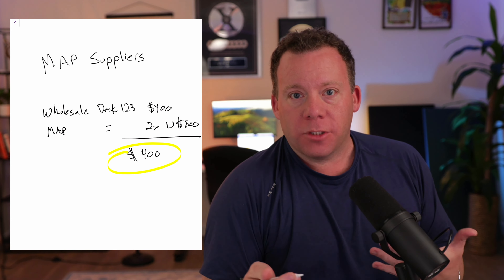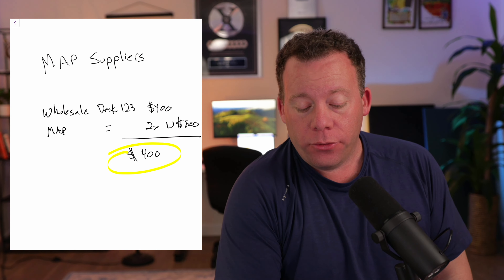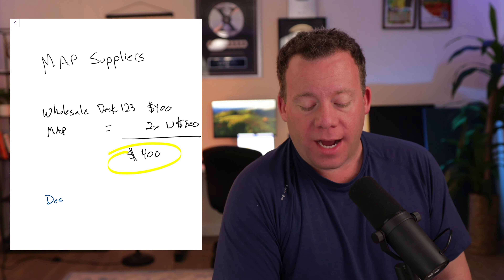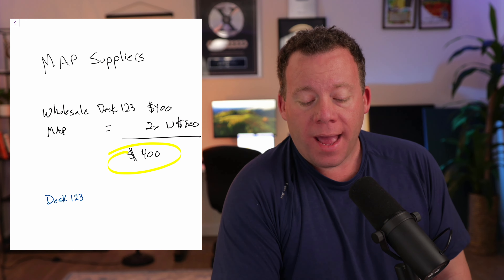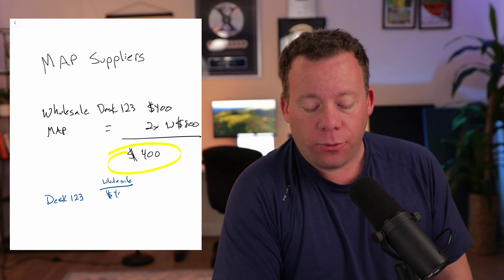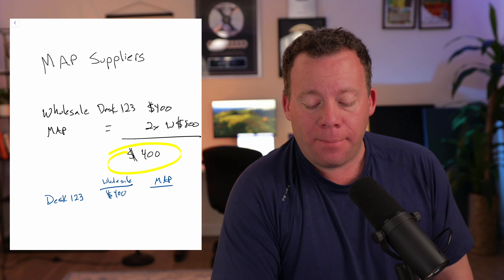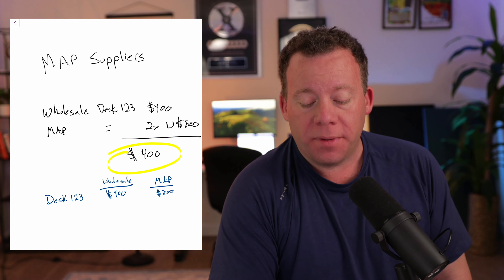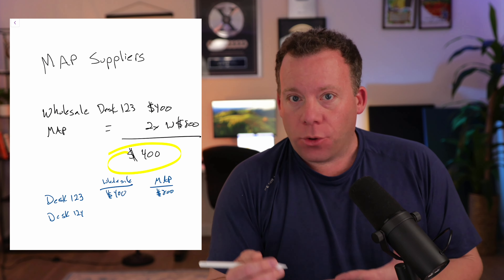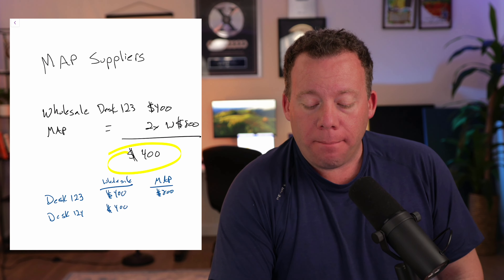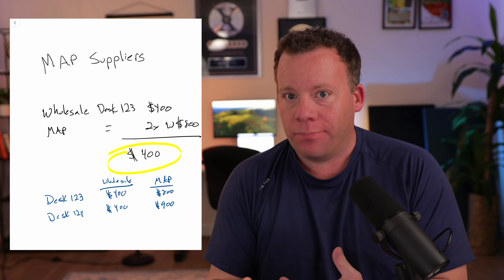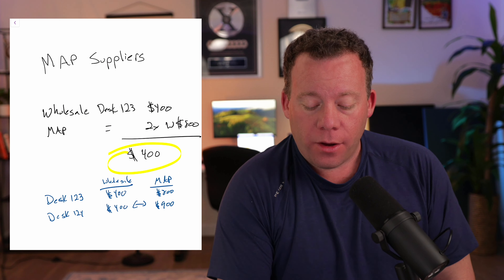They don't always do it this way. Some suppliers might actually send you a price list that includes both things. It might have the first column be the product — desk 1, 2, 3 — then a column for wholesale (say $400), and then another column that has MAP (say $800, which in this case would be 2X). But then maybe desk 124 has a wholesale price of $400 but MAP for that product is $900 — the spread there would be $500. This is another way suppliers might present you with this information.